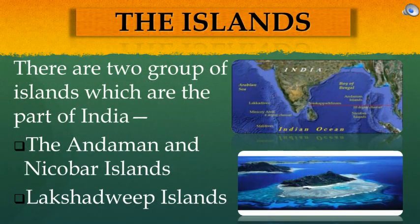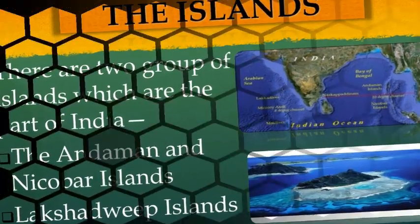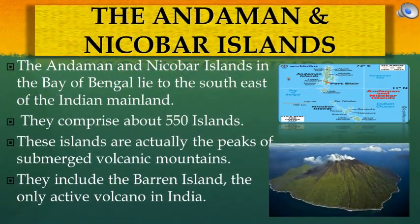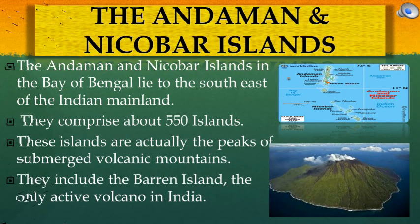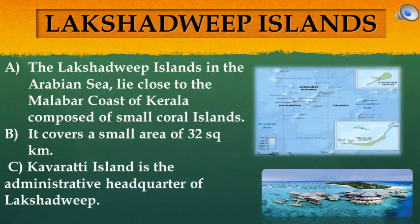There are two groups of islands which are part of India: the Andaman and Nicobar Islands and the Lakshadweep Islands. The Andaman and Nicobar Islands in the Bay of Bengal lie to the southeast of the Indian mainland; they comprise about 550 islands and are actually the peaks of submerged volcanic mountains. They include Barren Island, the only active volcano in India. The Lakshadweep Islands in the Arabian Sea lie close to the Malabar coast of Kerala; composed of small coral islands, they cover a small area of 32 square kilometers. Kavaratti Island is the administrative headquarters of Lakshadweep.